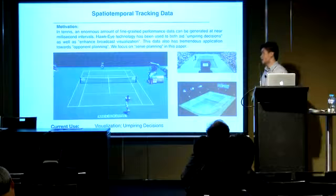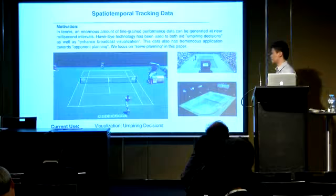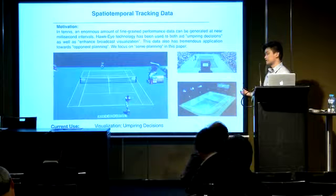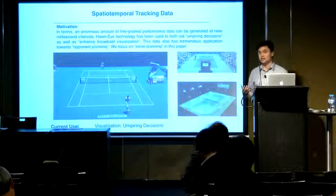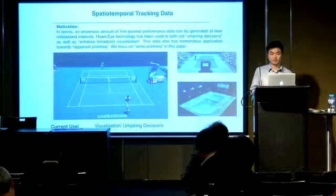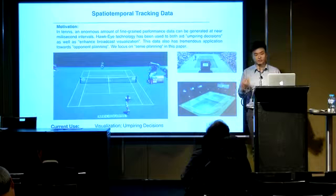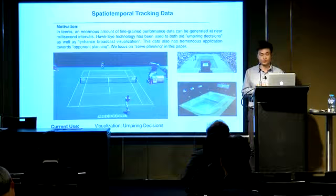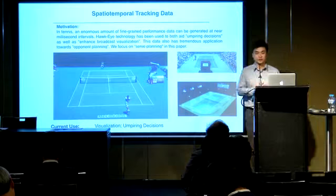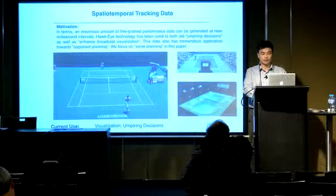So why do we do this research? In tennis, there is a large amount of fine-grained performance data produced at almost every official game because of the Hawkeye system. It can track the position of the ball very accurately and at a very high frame rate. But currently this technology is mainly used for umpiring decisions and enhanced broadcast visualizations. We believe there's more knowledge we can learn from such data in terms of planning for an upcoming opponent and providing recommendations to a player. We focus on the serve in this paper, but we also have work on predicting rallies, predicting winners, and analyzing player behaviors.